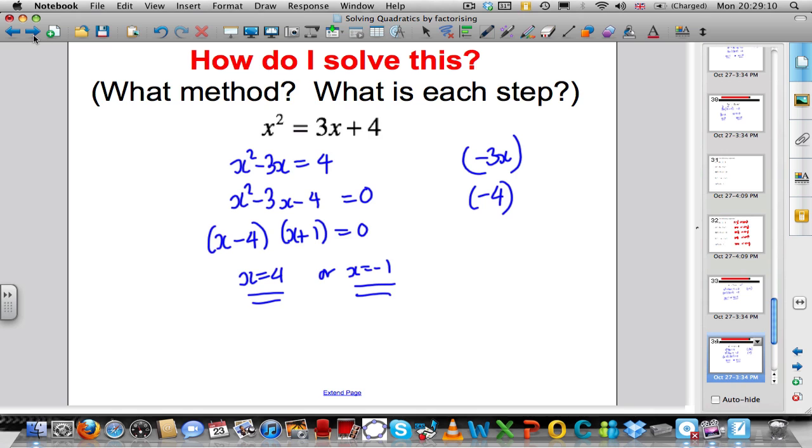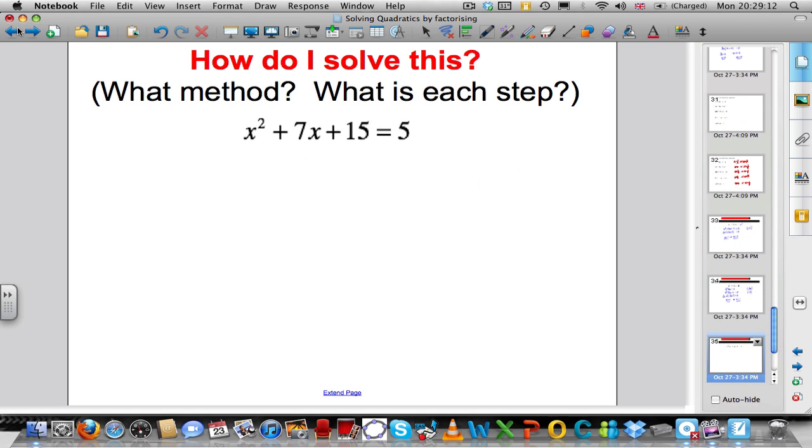The last slide, I want you to have a go at a few yourself. Just before we do that, I actually just want to show you one more thing. Here's another one. x squared plus 7x plus 5, not equal to 0, a quadratic, equal to 5. Subtract 5 off both sides to get x squared plus 7x plus 10 equals 0.